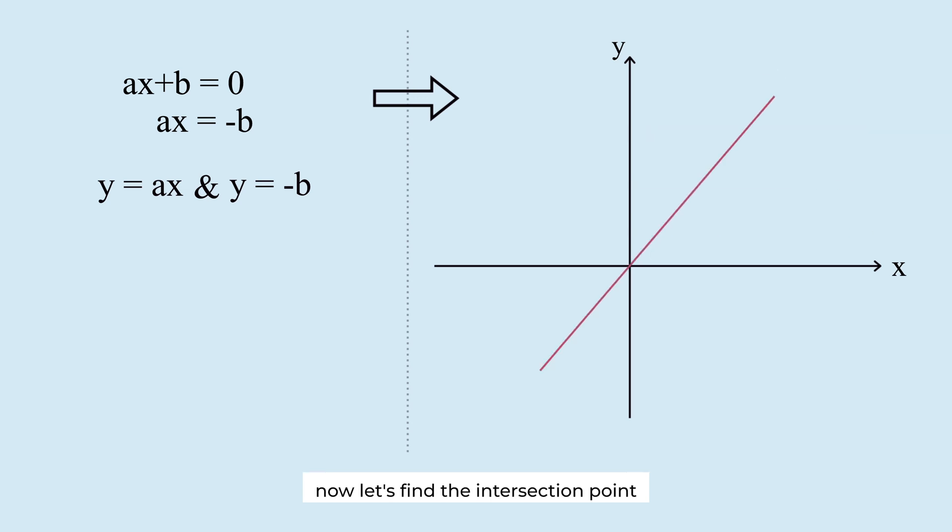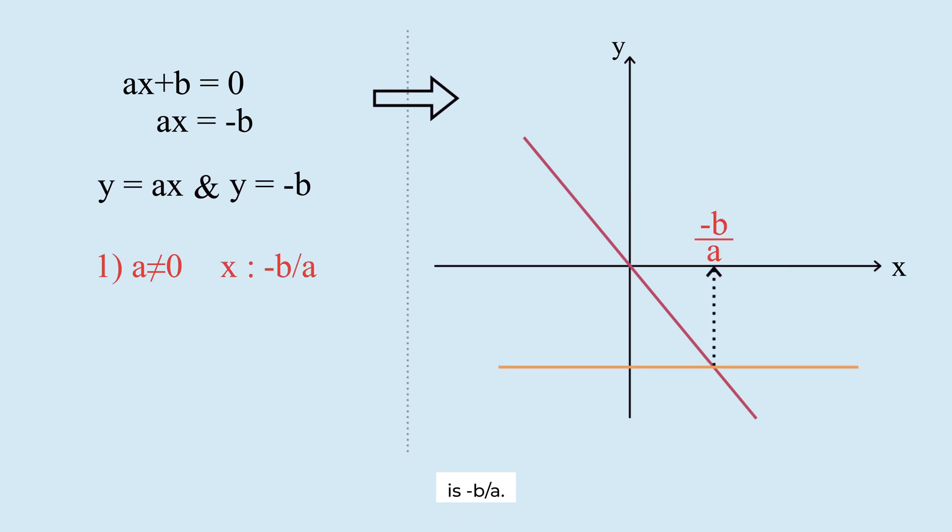Now, let's find the intersection point of the two lines. If a is not 0, the two lines must intersect at exactly one point. The x-coordinate of that intersection is minus b over a.